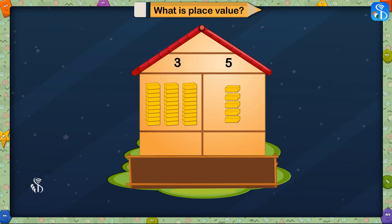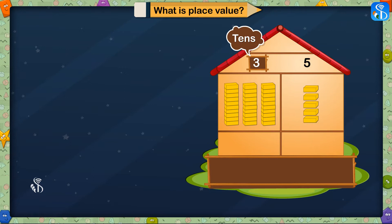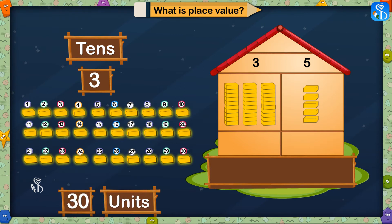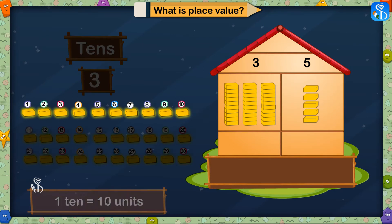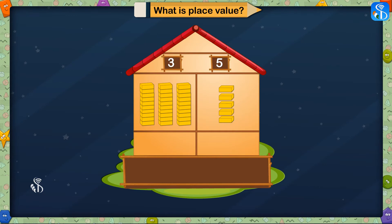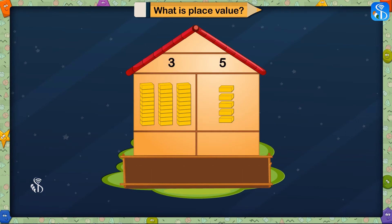For example, take the number 35. In this number, 3 is in tens place and 5 is in units place. If we open the bundles of 3 tens, we get 30 units, because 1 ten is equal to 10 units and 3 tens are 30 units. Therefore, the place value of 3 in the number 35 is 30. 5 is in units place, so its place value is 5 only.